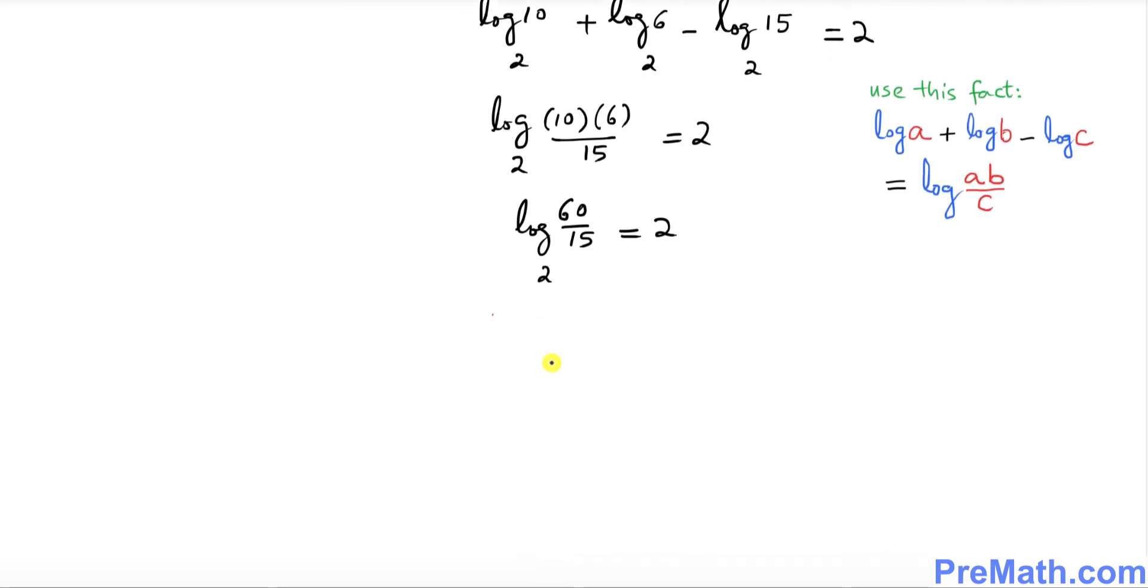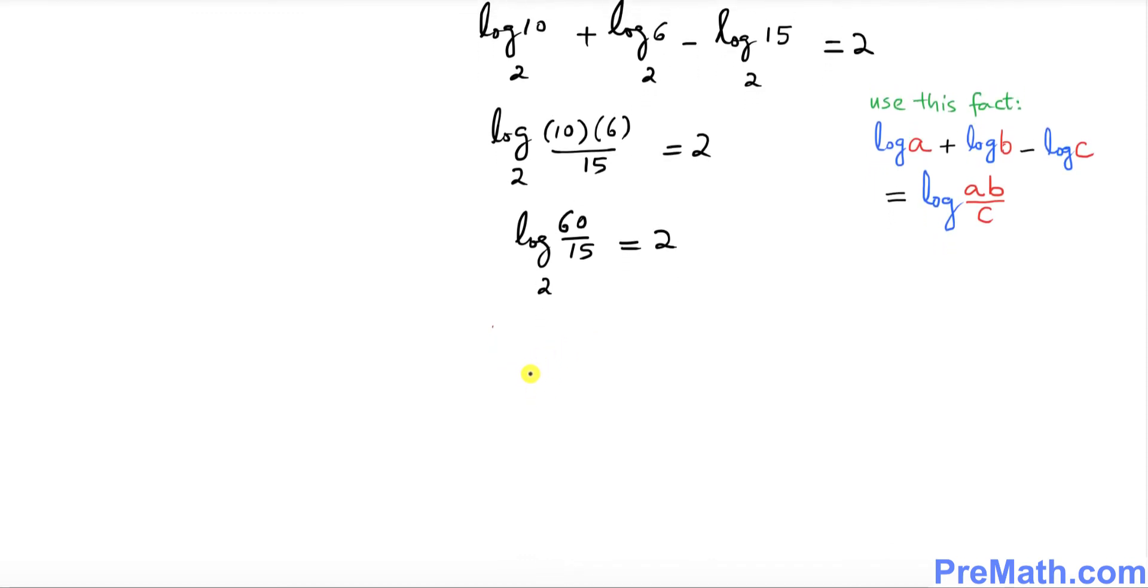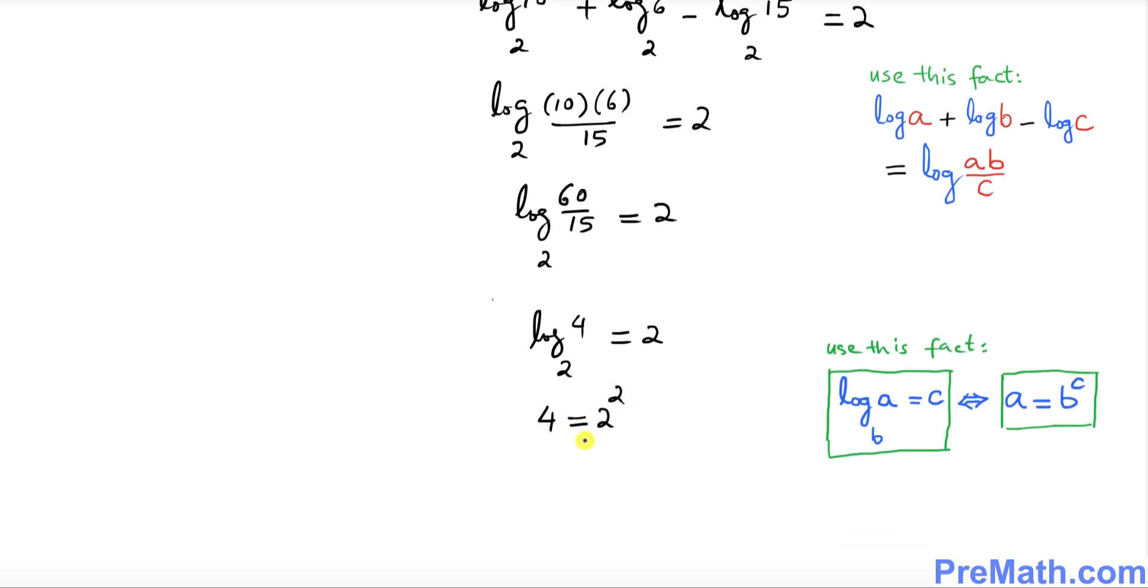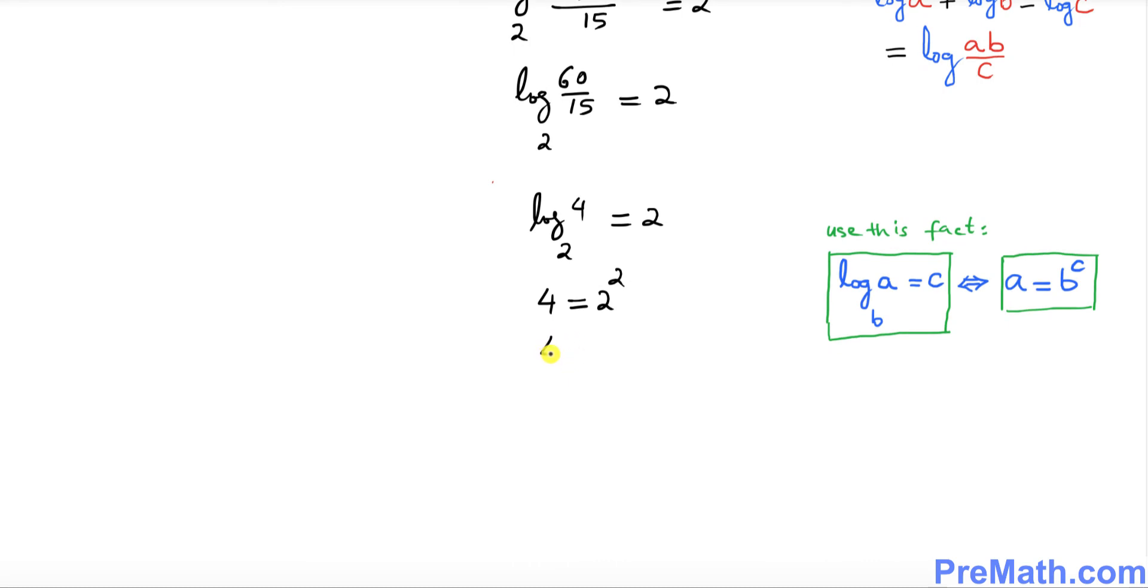15 goes into 60 4 times base 2 equals to 2 and now let's convert it into exponential form by using this fact on the right hand side. So 4 could be written as 2 power 2 and that means 4 equals to 4.